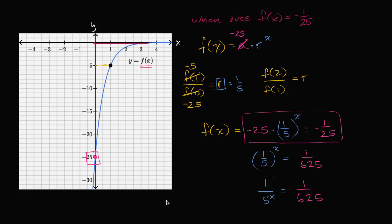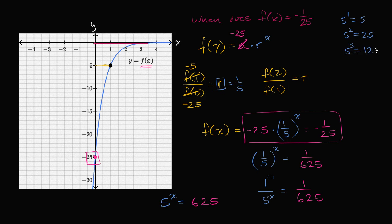So five to the x power needs to equal six hundred and twenty-five. The best way to think about this is to list our powers of five: five to the first is five, five squared is twenty-five, five to the third is one hundred and twenty-five, five to the fourth — multiply that by five — you get six hundred and twenty-five. So x is going to be four, because five to the fourth power is six hundred and twenty-five.